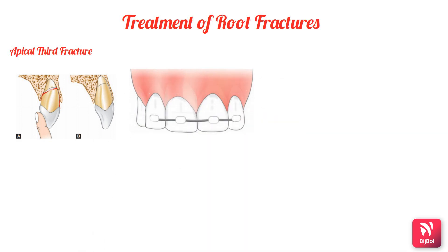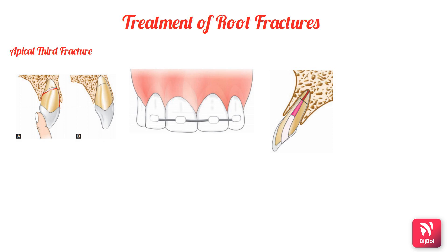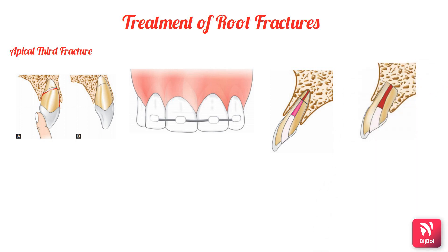If the pulp in the apical third is vital, prognosis is good. If the pulp in the coronal portion is also vital, the tooth is made stable with no additional treatment. If the pulp in the coronal portion is non-vital, root canal therapy of the coronal segment is performed with no treatment of the apical segment. If the tooth fails to recover, surgical removal of the apical segment is suggested.